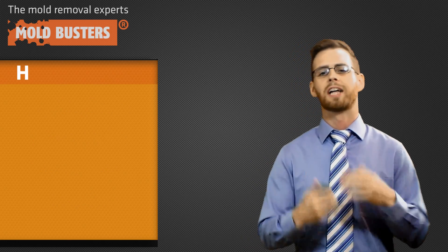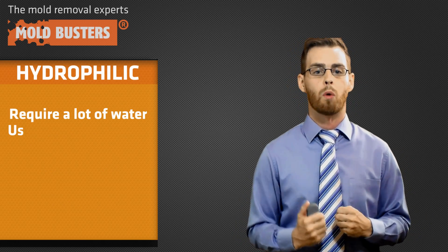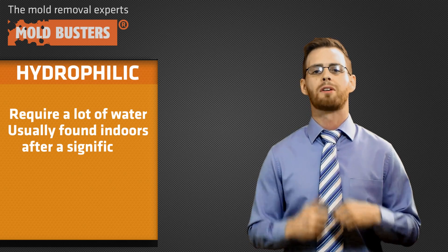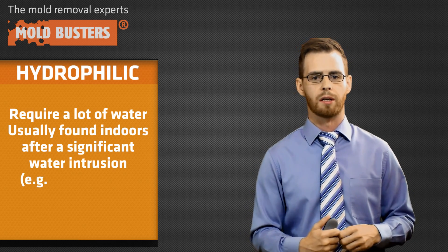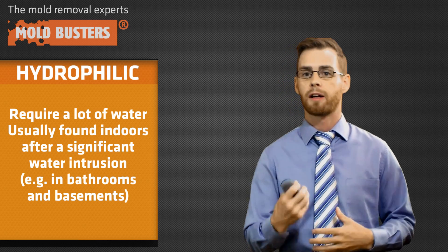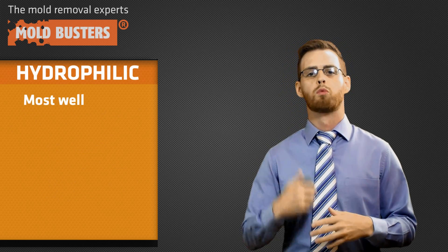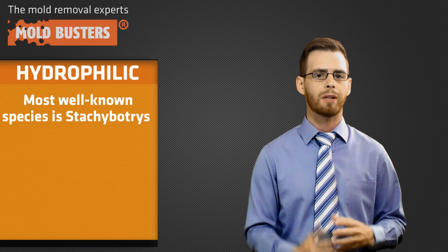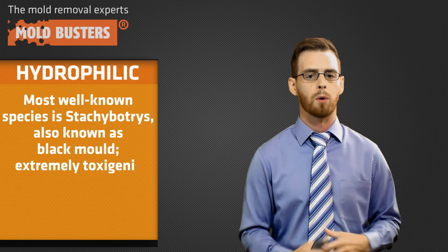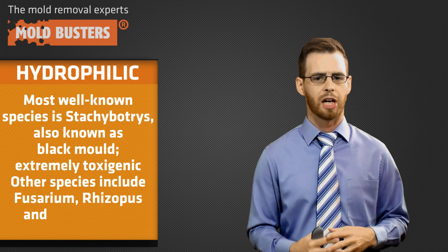The first group is hydrophilic types of mold, which requires a lot of water. This type of mold is usually found after a significant period of water intrusion, such as bathroom leaks or a flood in a basement. Some of the most well-known species of this type of mold is Stachybotrys, otherwise known as black mold. This type of mold is extremely toxigenic.